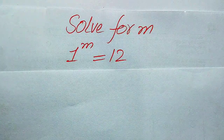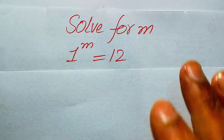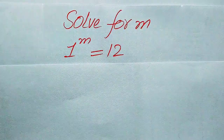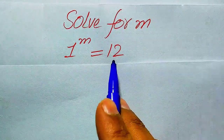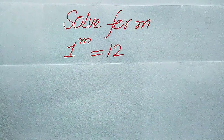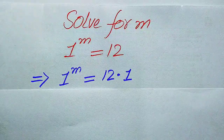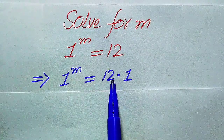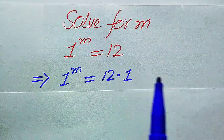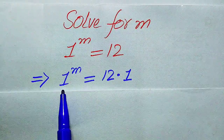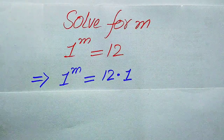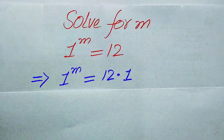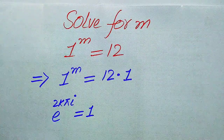Now we move toward the solution of this problem. First, we rewrite this equation as 1 to the power of m equals to 12. We write this 12 as 12 times of 1, because 12 times of 1 equals to 12. You see here both sides involve 1.